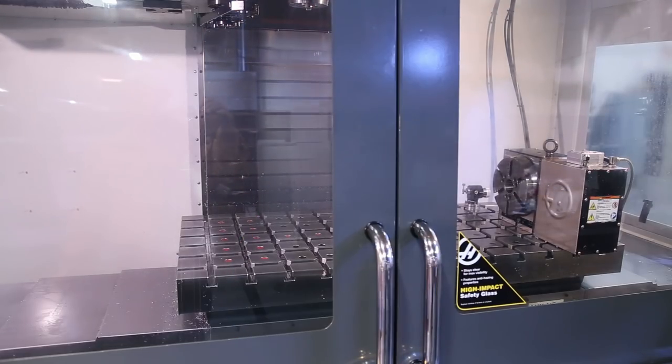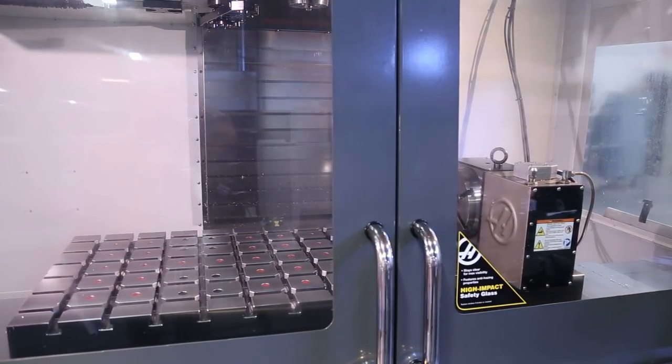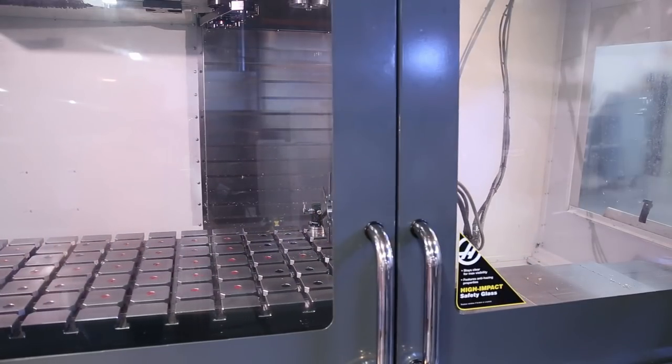Zero return all axes, then jog the X and Y axes to the center of travel. Change setting 7 to off and press enter.